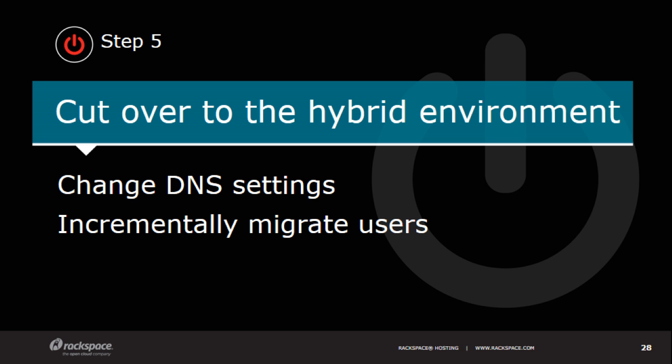Finally, the big scary day: actually changing DNS settings and cutting over the environment. One approach I like — depending on load balancing or geographic load balancing capabilities deployed — is moving certain sets of users over at a time. You can have a canary group to test functionality with and make sure they're happy before cutting everything over. That's not always possible depending on how the application and database backend are constructed. The primary point is: you've picked a time, frozen the primary environment, cut users over, copied that delta of data, and gone into production. Hopefully by this point, you've also documented a clear rollback process in case something unforeseen occurs.